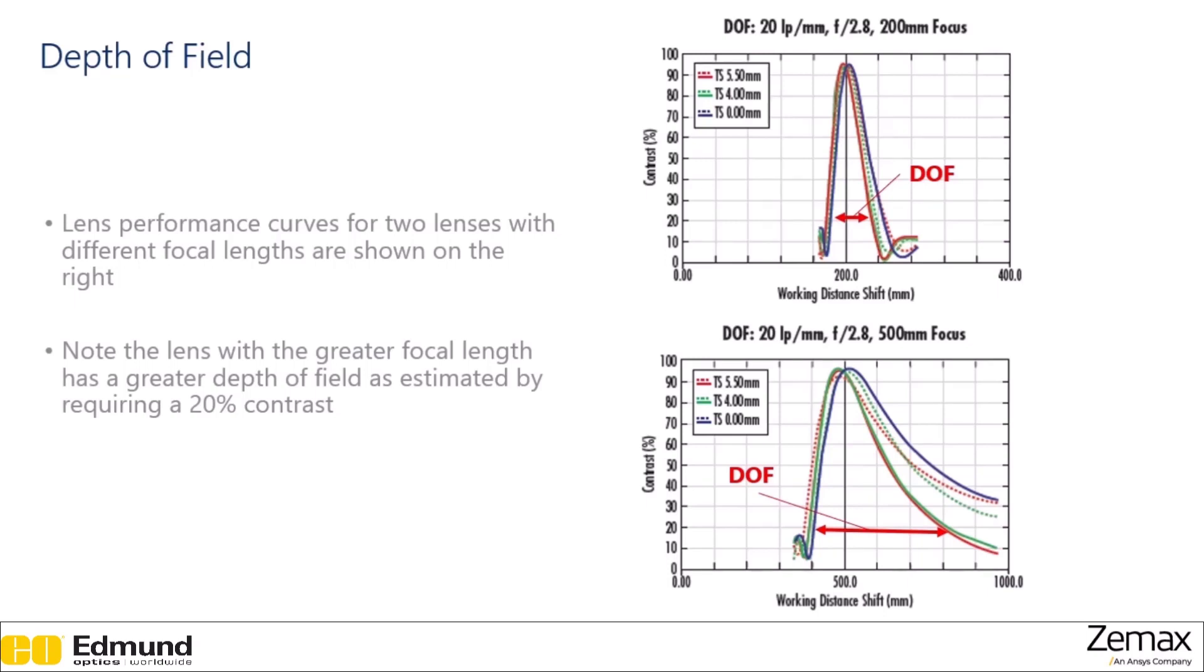And here we have a comparison for two performance curves for identical optical systems except that they have different focal lengths for the lenses. So we can see that for the shorter focal length, the 200mm focus, the depth of field that is achievable is less than it is for the 500mm focus. So what depth of field you can get depends on the optics that are in your system.